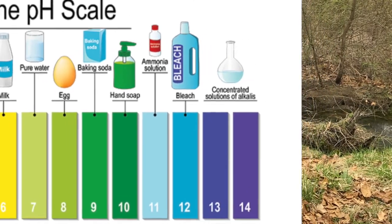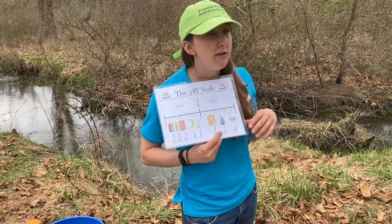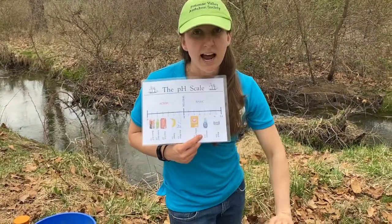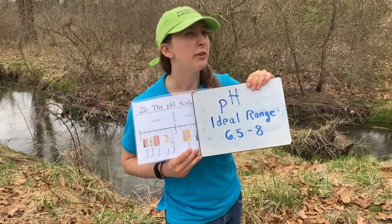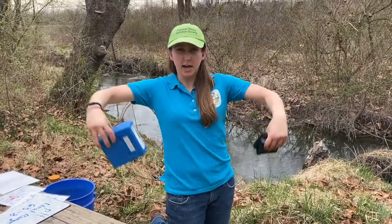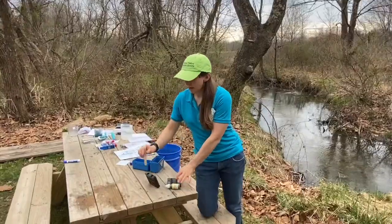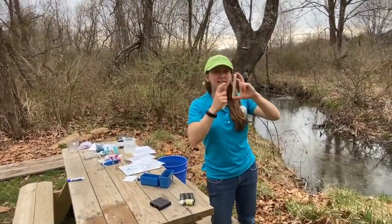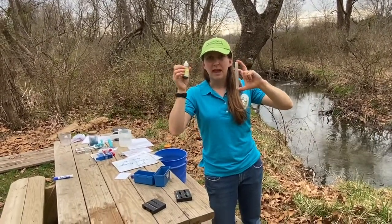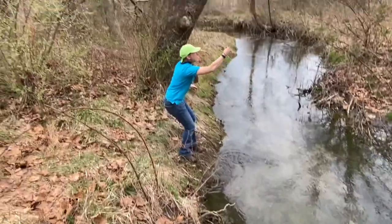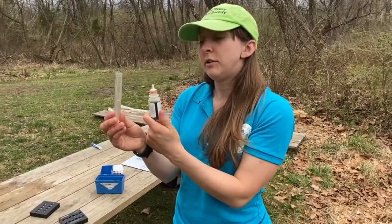Things like bleach, window cleaner, and baking soda are all bases. For fish to live in our stream, we need an ideal pH range of 6.5 to 8. Let's see what Bullskin Run's pH is. I've got my handy dandy pH testing kit. I'm going to put water from the stream in this test tube and add drops of the solution to it — it's going to change color.